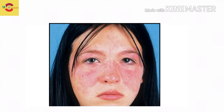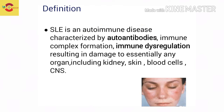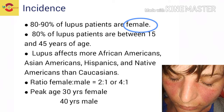Now let us see a skin lesion which does not confine itself to the skin but also has systemic manifestations - it is Systemic Lupus Erythematosus. SLE is an autoimmune disease characterized by auto-antibodies, immune complex formation, and immune dysregulation, resulting in damage to essentially any organ.